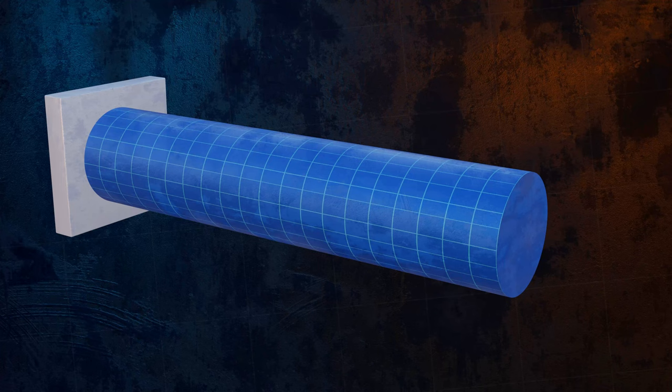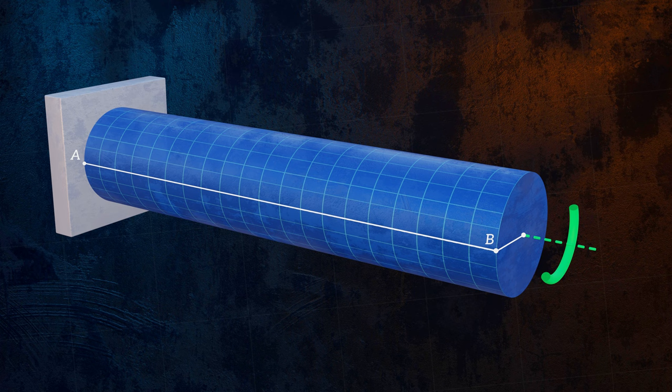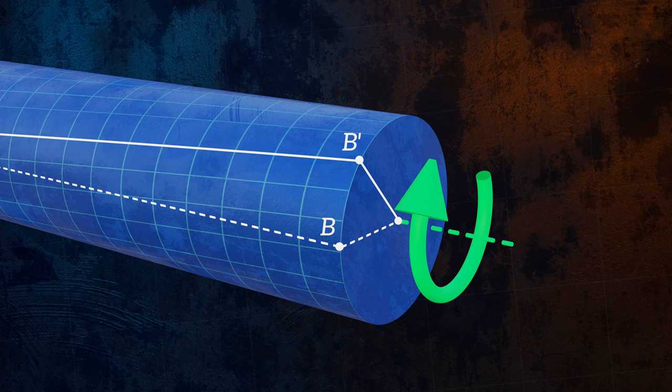Let's fix our bar at one end, and track how a line between point A and point B deforms as we apply a torque to the other end. The applied torque causes the free end of the bar to rotate by an angle phi. This is called the angle of twist.